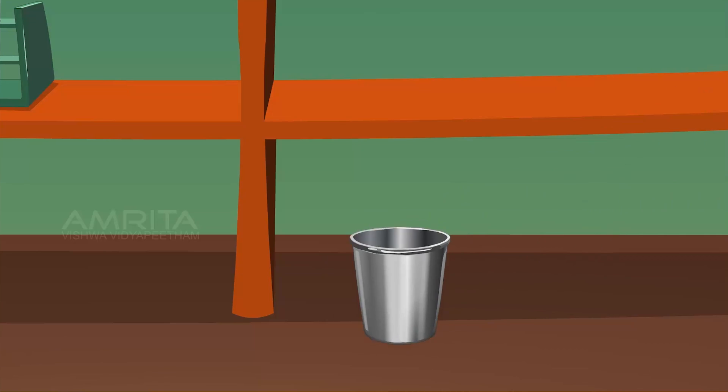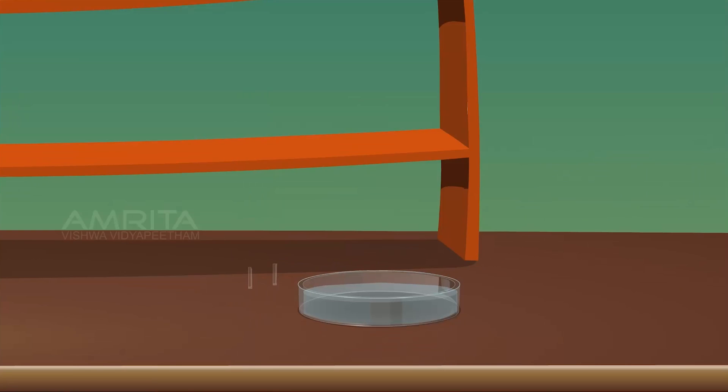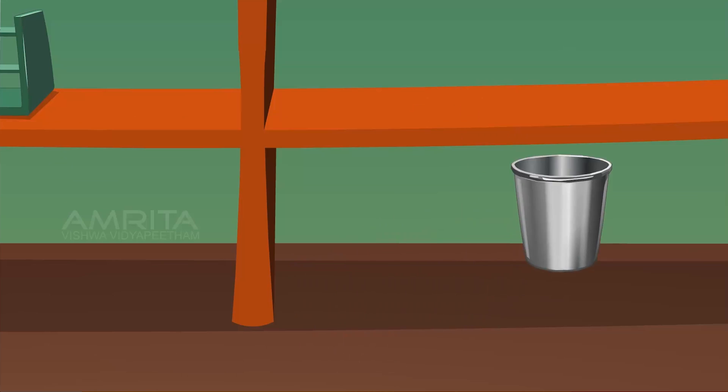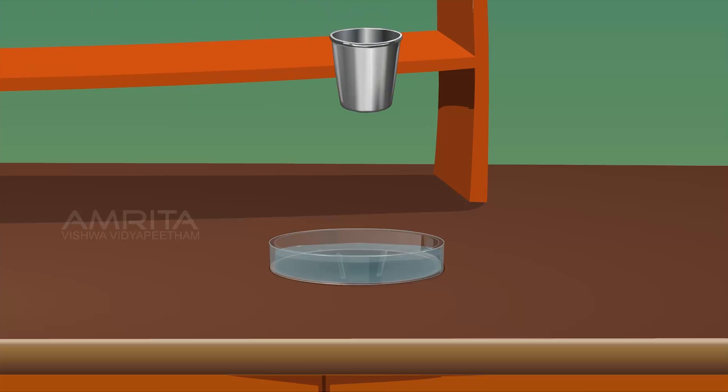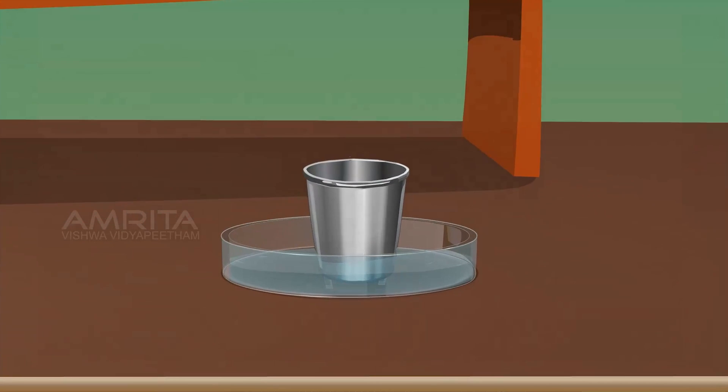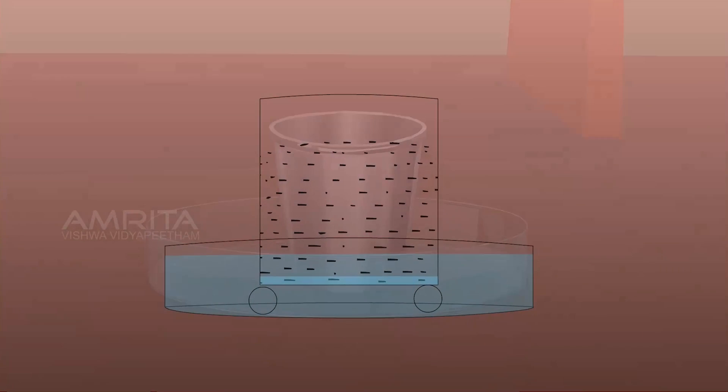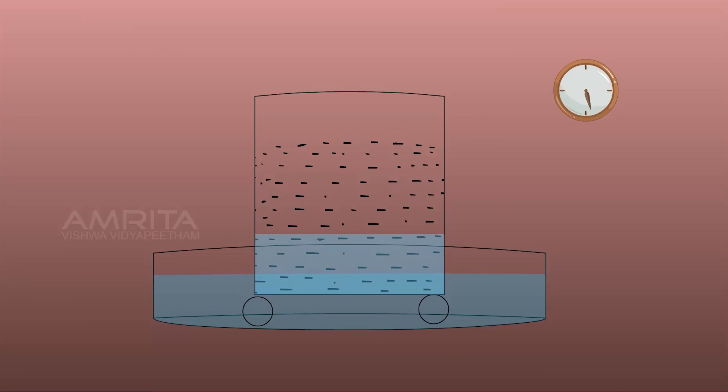Take a petri dish filled with water. Take two small glass rods and place them parallel to and at a small distance from each other. Place the soil filled tin on the two glass rods in such a manner that its bottom is in contact with water. Leave the setup undisturbed till water appears on the upper surface of the soil.